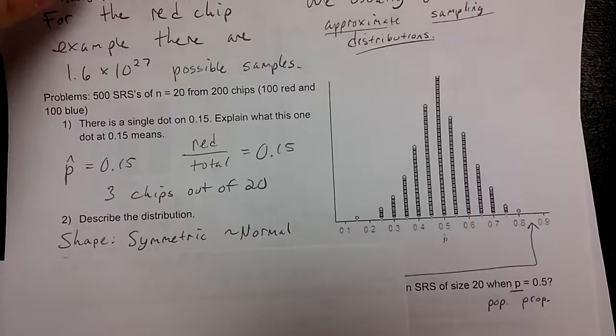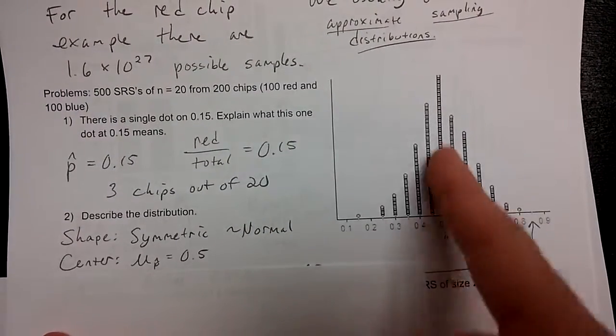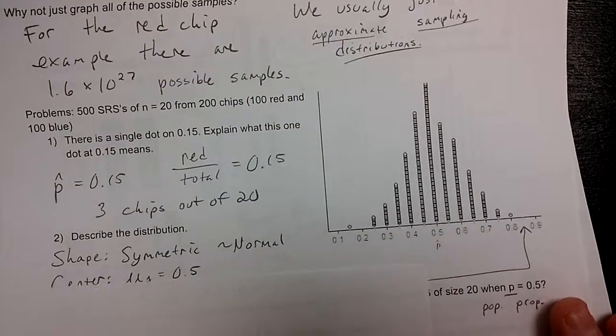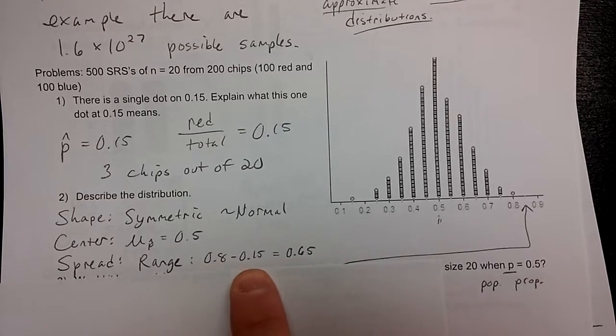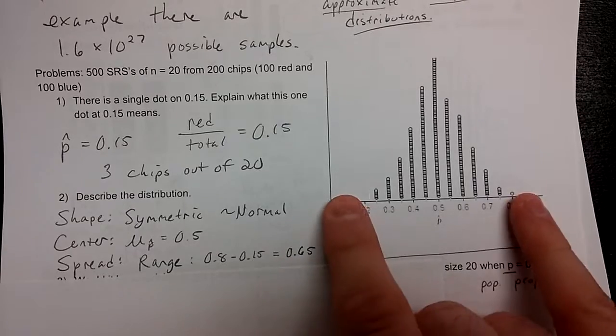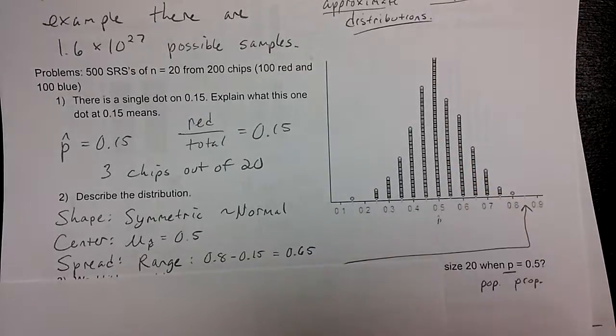Describing the distribution, we'll say symmetric or approximately normal, the shape. The center looks right at 0.5 right here. So the mu of p hat is 0.5. Spread, the range is 0.8 to 0.15. Subtract those, you get 0.65. So a little bit larger than the other range, but the majority of the data is right around 0.5 here.